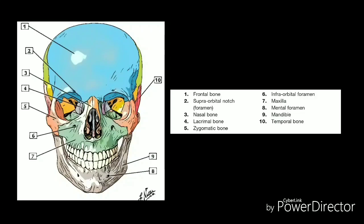The viscerocranium bones form the anterior and lower regions of the skull and include the mandible, which attaches through the only truly movable joint found in the skull. The facial skeleton contains the vomer, two nasal conchae, two nasal bones, two maxilla, the mandible, two palatine bones, two zygomatic bones, and two lacrimal bones.